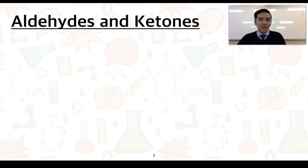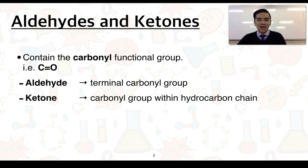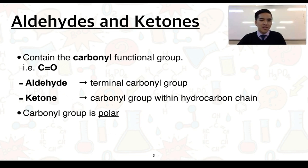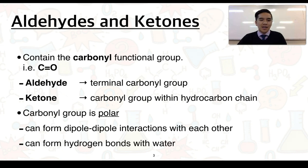Aldehydes and ketones consist of a carbonyl functional group, which is a carbon-to-oxygen double bond. The position of this carbonyl group is what makes aldehydes and ketones different. Aldehydes have a terminal carbonyl group, whereas ketones have a carbonyl group existing somewhere within the hydrocarbon chain. Carbonyl groups are polar, so they can form dipole-dipole interactions with each other, but they can also form hydrogen bonding with water, which we may need to use to explain their physical properties.